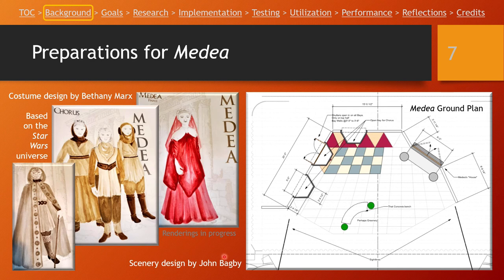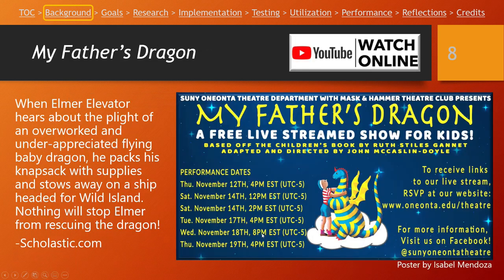The scenery design included considerations for distancing and keeping actors spread out from each other as part of the show. My Father's Dragon is a children's story about a character named Elmer Elevator who travels to an island to rescue a dragon that is imprisoned by the animals of the island — there are all sorts of fun adventures that Elmer goes on. If you haven't watched our show, you can click on the YouTube link and watch it before proceeding with this presentation.